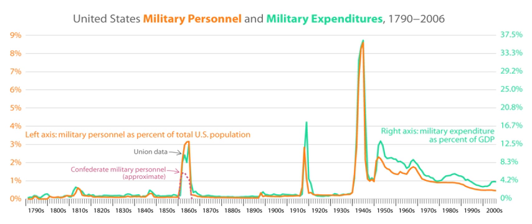Secretary of War Elihu Root led the modernization of the army. His goal of a uniformed chief of staff as general manager and a European-type general staff for planning was stymied by General Nelson A. Miles, but did succeed in enlarging West Point and establishing the U.S. Army War College as well as the general staff. Root changed the procedures for promotions and organized schools for the special branches of the service. He also devised the principle of rotating officers from staff to line. Root was concerned about the army's role in governing the new territories acquired in 1898 and worked out the procedures for turning Cuba over to the Cubans, and wrote the charter of government for the Philippines.